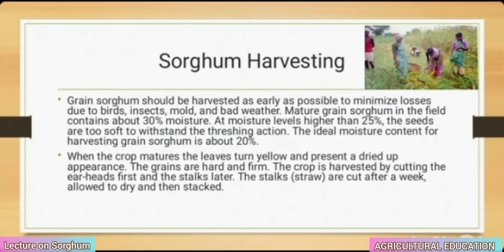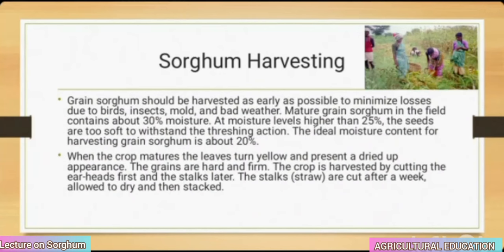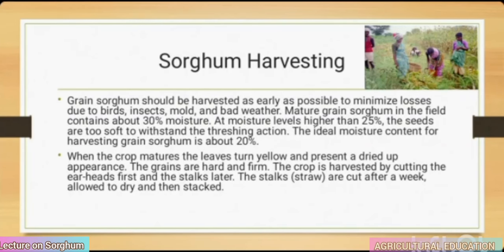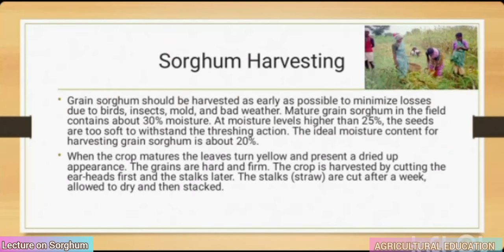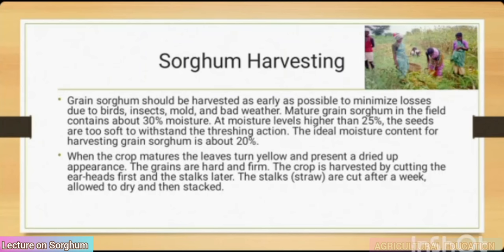Sorghum harvesting: grain sorghum should be harvested as early as possible to minimize losses due to birds, insects, mold and bad weather. Mature grain sorghum in the field contains about 30% moisture; at moisture levels higher than 25%, seeds are too soft to withstand the threshing action. The ideal moisture content for harvesting is about 20%. When the crop matures, leaves turn yellow and present a dried-up appearance, and the grains are hard and firm. The crop is harvested by cutting the ear heads first and the stalks later; stalks are cut after a week, allowed to dry and then stacked.